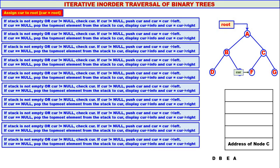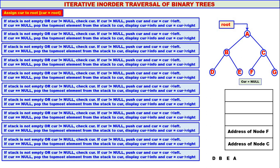Again, stack is not empty or curry not equal to null — stack is not empty and curry is not equal to null. Push address of node F onto the stack. Curry moves to curry's left, but there is no left child for F, so curry becomes null. Stack is not empty but curry is null — we check curry. If curry is equal to null, pop the topmost element — address of node F is popped and assigned to curry. Display F. Curry moves to curry's right. There is no right child for F, so curry becomes null.